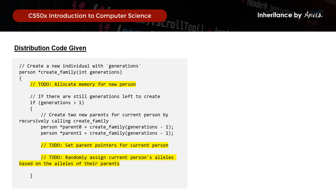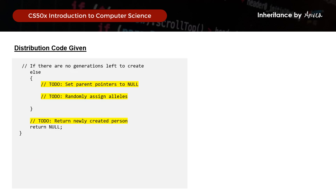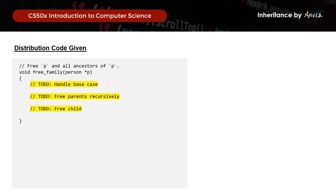We also need to randomly assign the person's alleles based on their parent's alleles. If there are no more generations to create, we set the parent pointers to null and randomly assign alleles, since this is the oldest generation. Then we return the newly created person. Lastly, we need to free memory — with the base case being parents and child. So those are the 9 items we need to do.